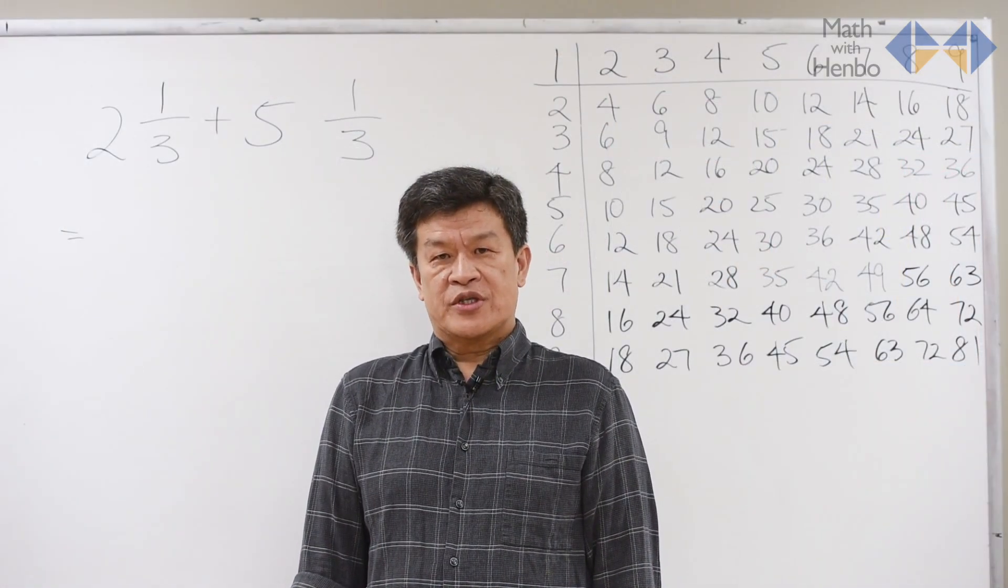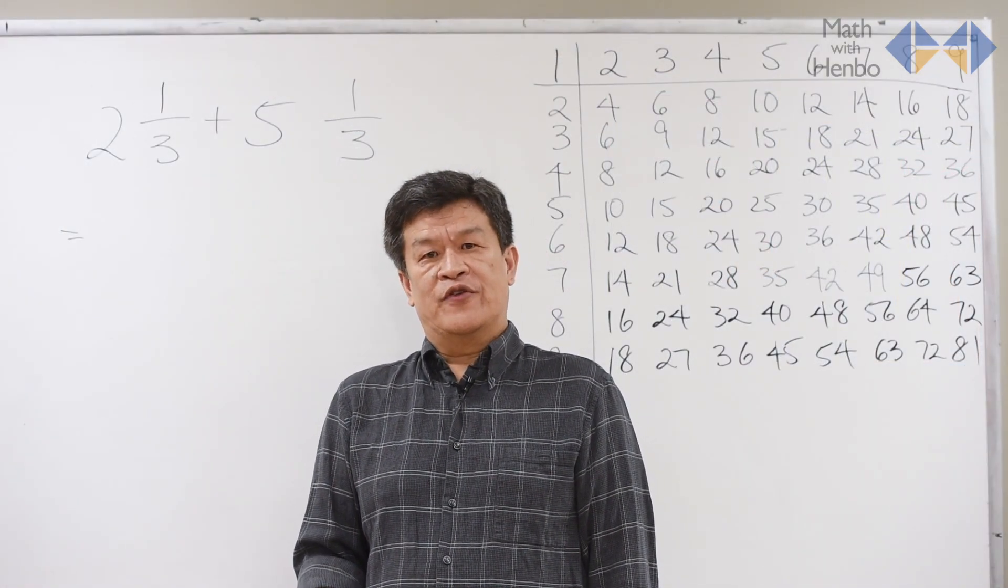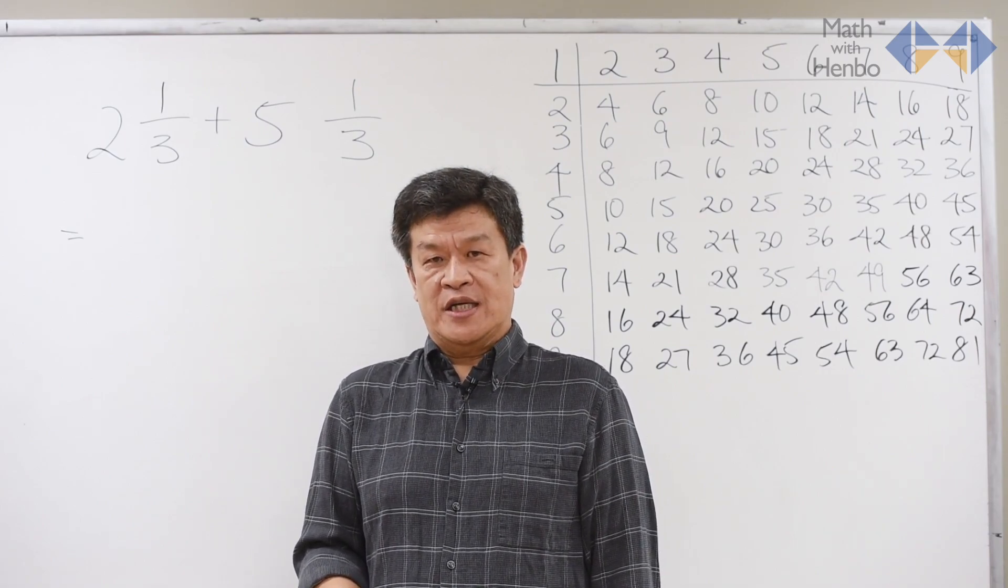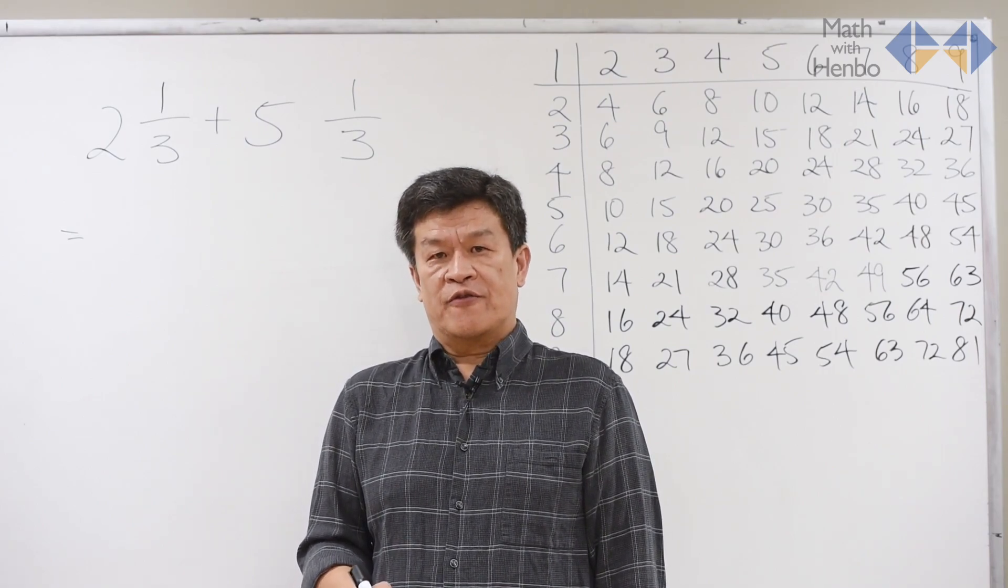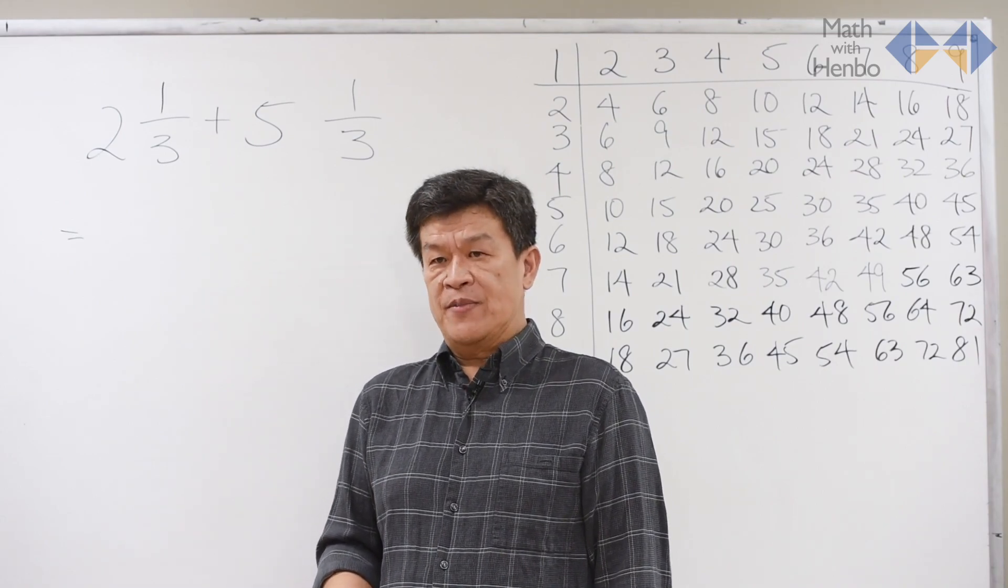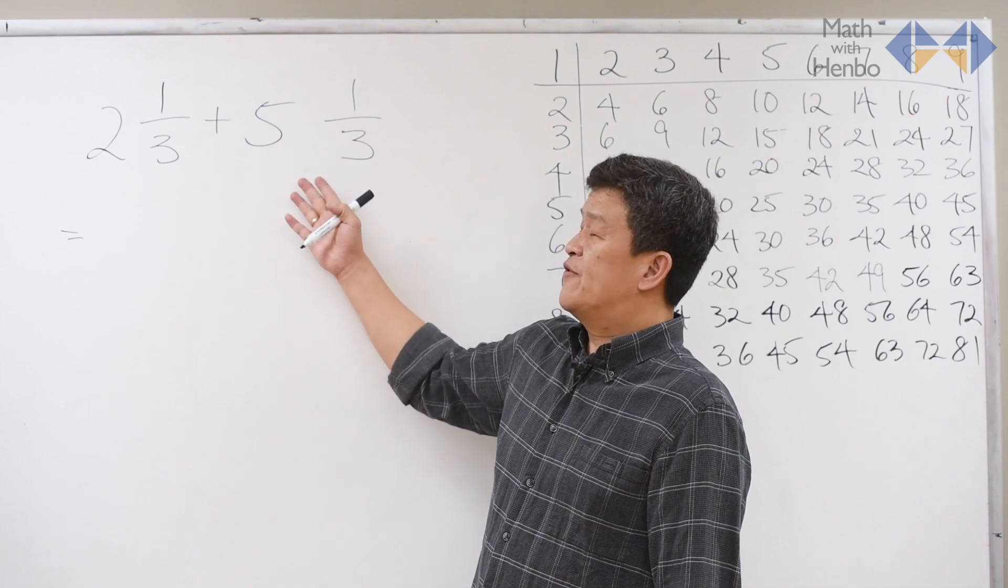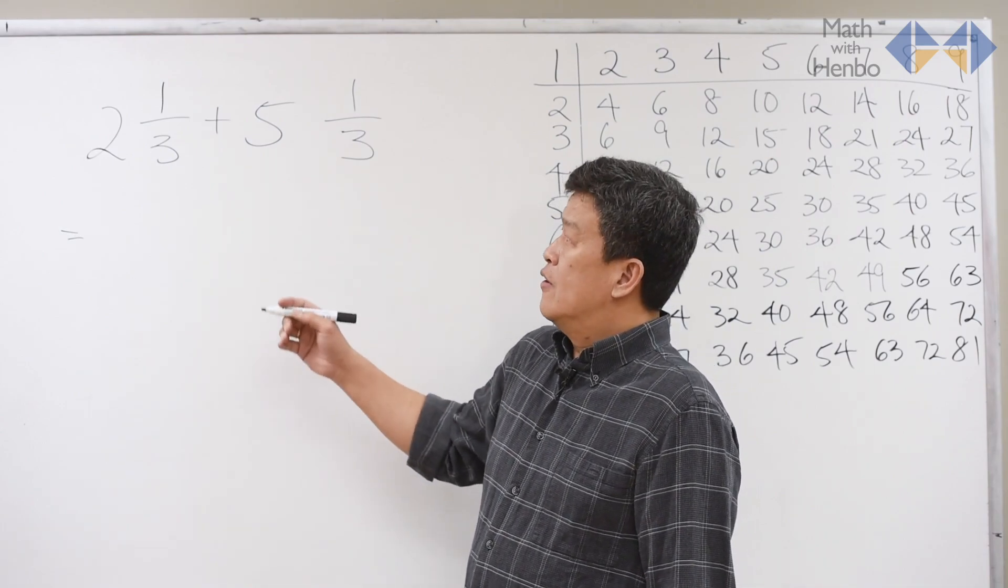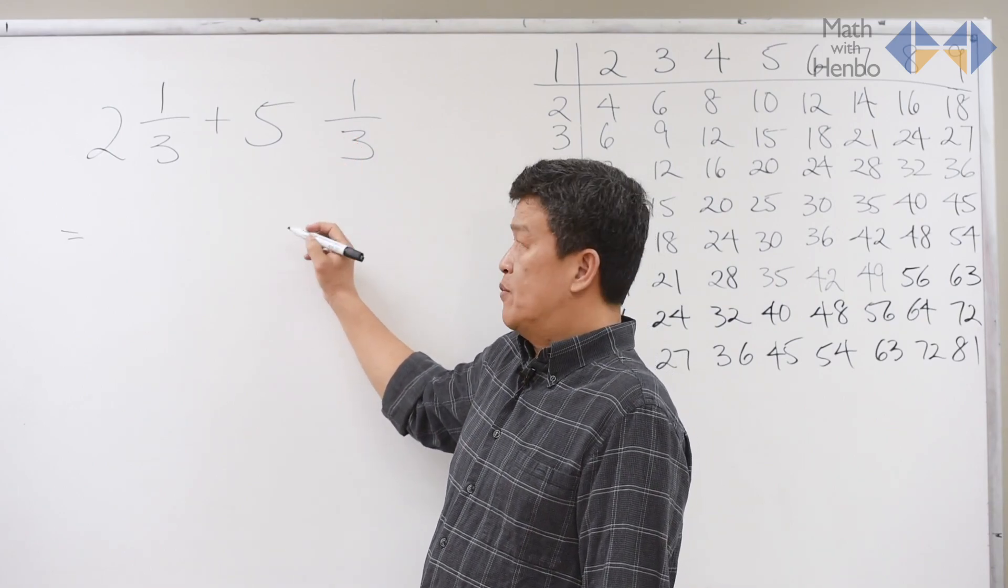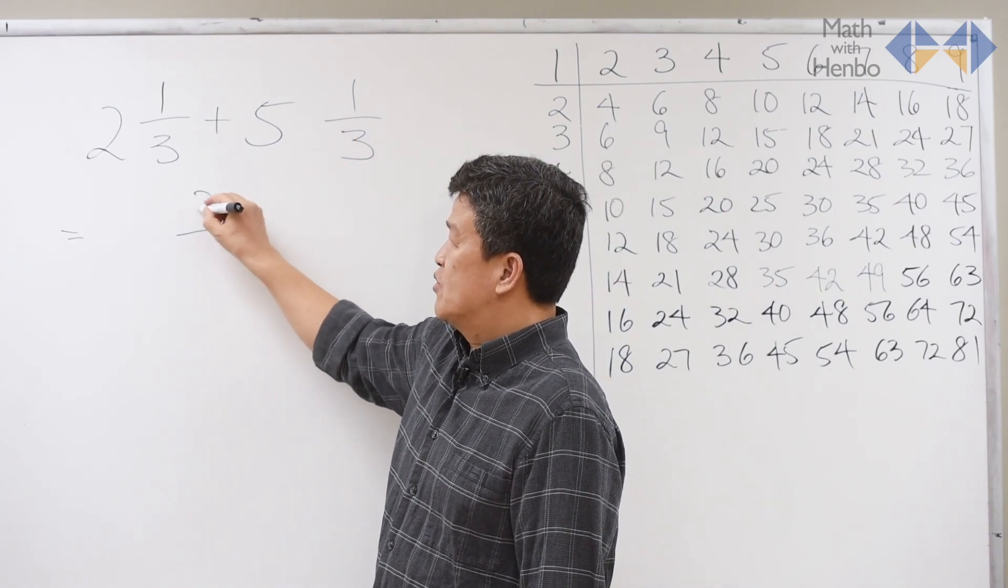Now, when it comes to mixed numbers, you don't have to convert them to improper fractions if you're adding and subtracting. All you need to do is take care of the fractions first, and then take care of the whole numbers afterwards. For example, here, we have 2 thirds plus 5 and 1 third. From the previous rule, we know you should add only the top numbers and leave the bottom alone, so the fraction becomes 2 thirds.